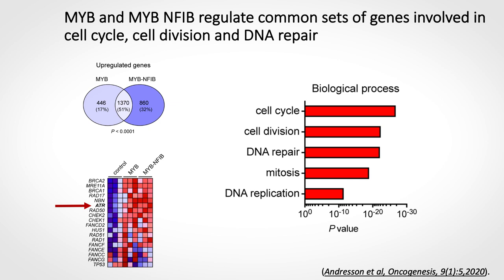When we analyzed the gene expression patterns downstream of MIB or MIB-NFIB, we found that both were able to regulate a common set of genes involved in the cell cycle, cell division, and DNA repair. We were particularly intrigued by the observation that MIB and MIB-NFIB were able to activate a gene called ATR.